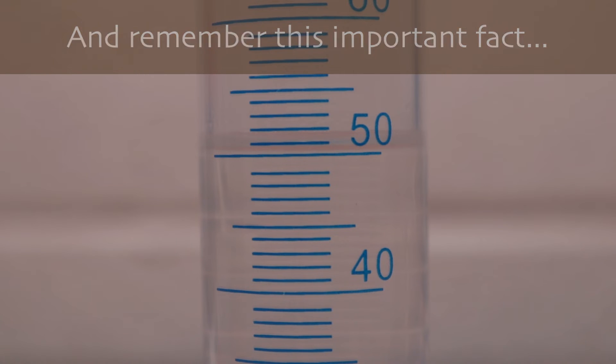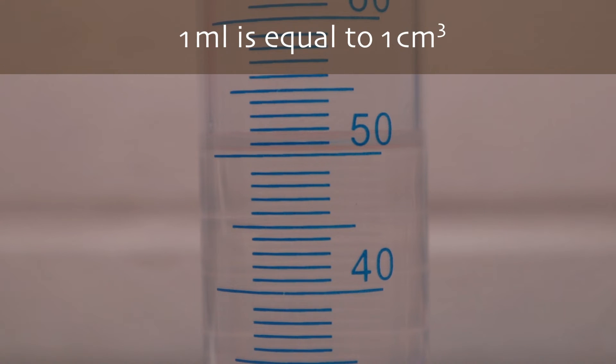If you didn't know it already, 1 milliliter is equal to 1 cubic centimeter. You heard it here first. Or maybe you didn't.